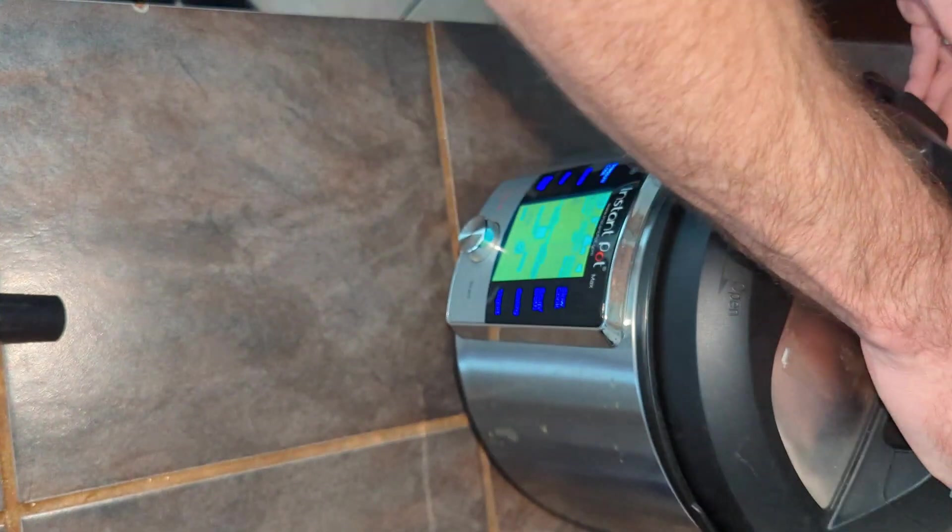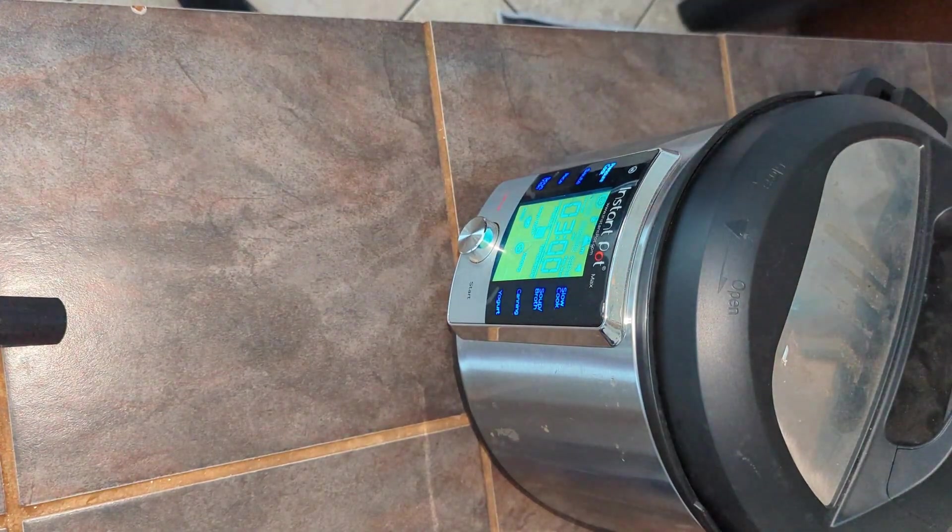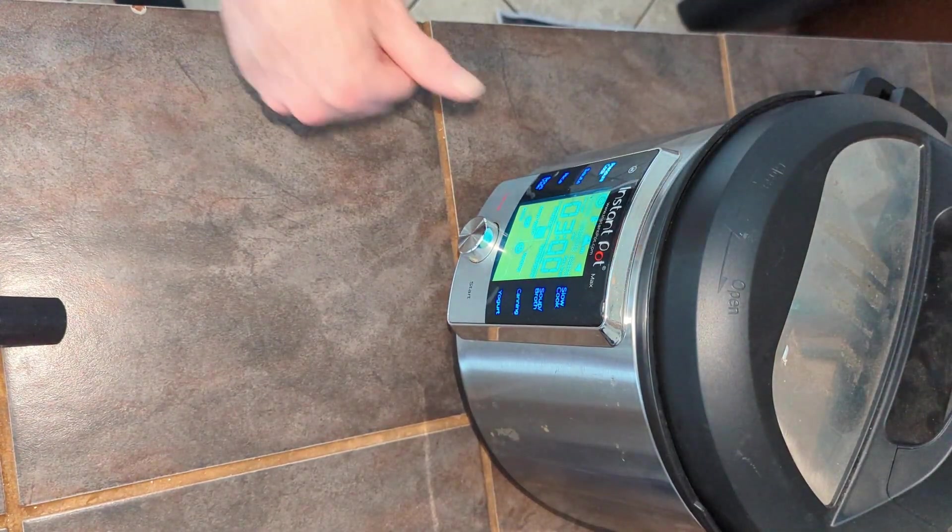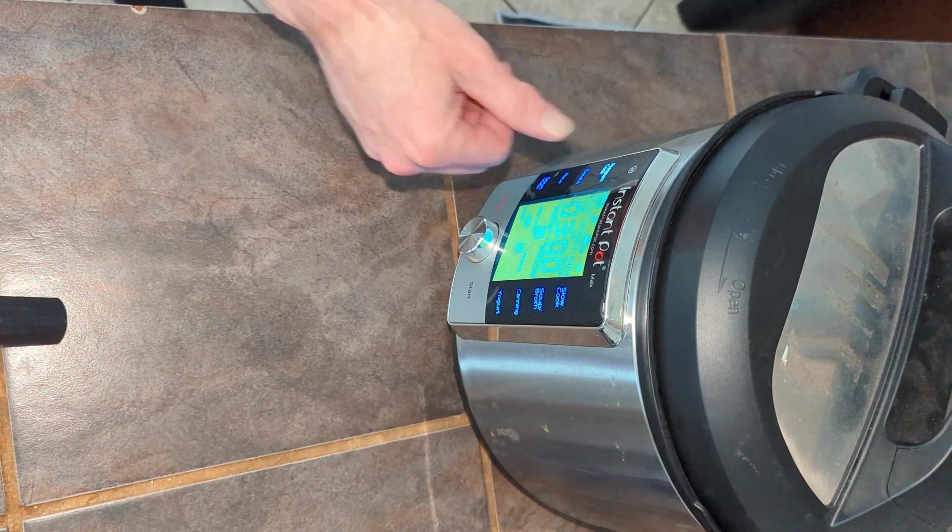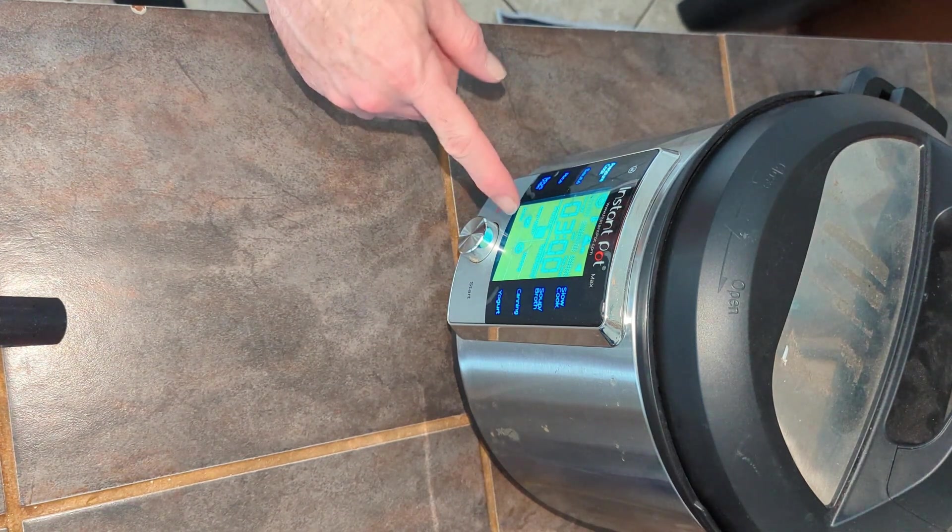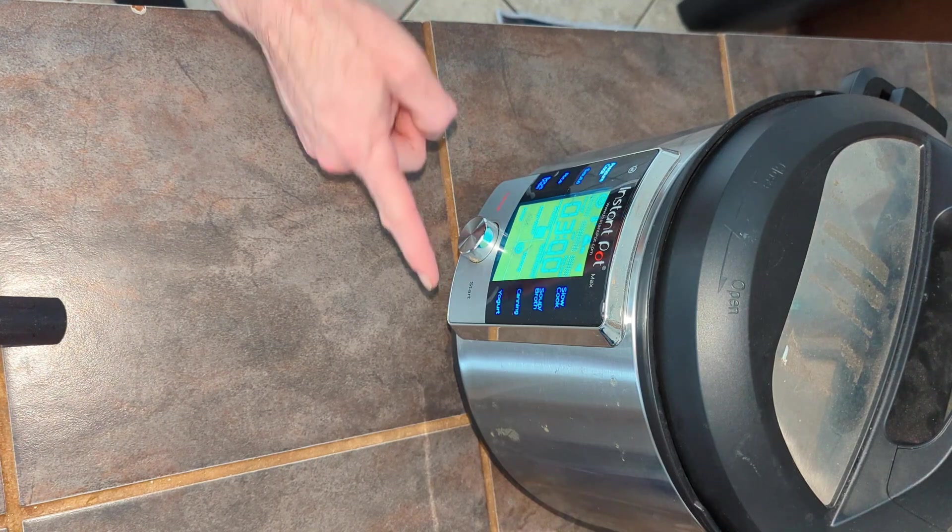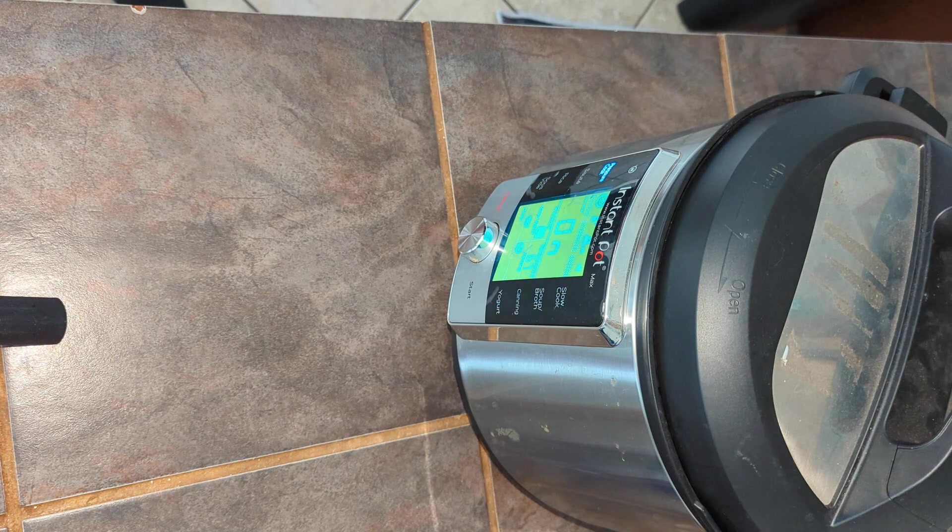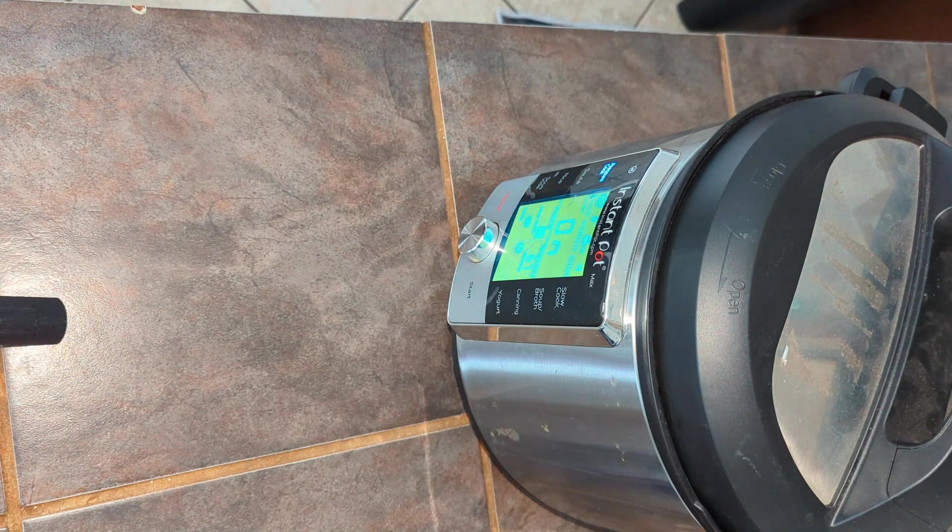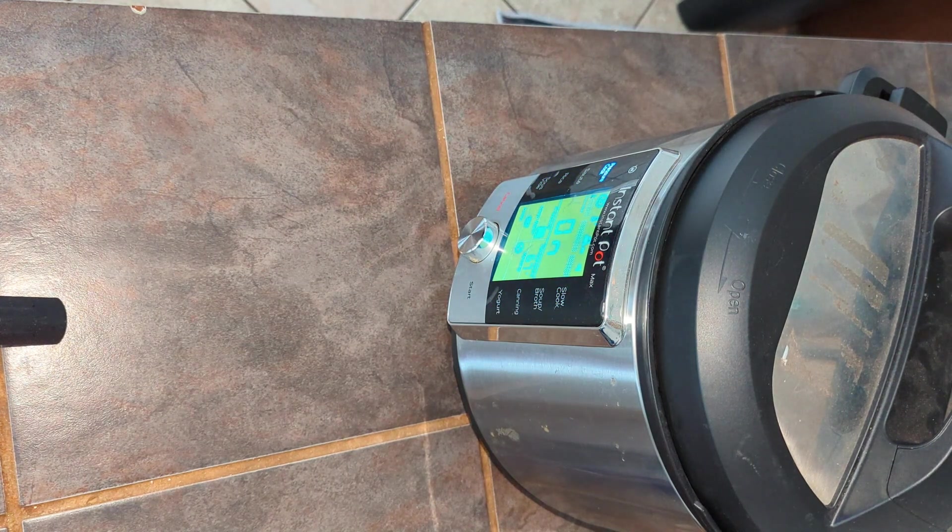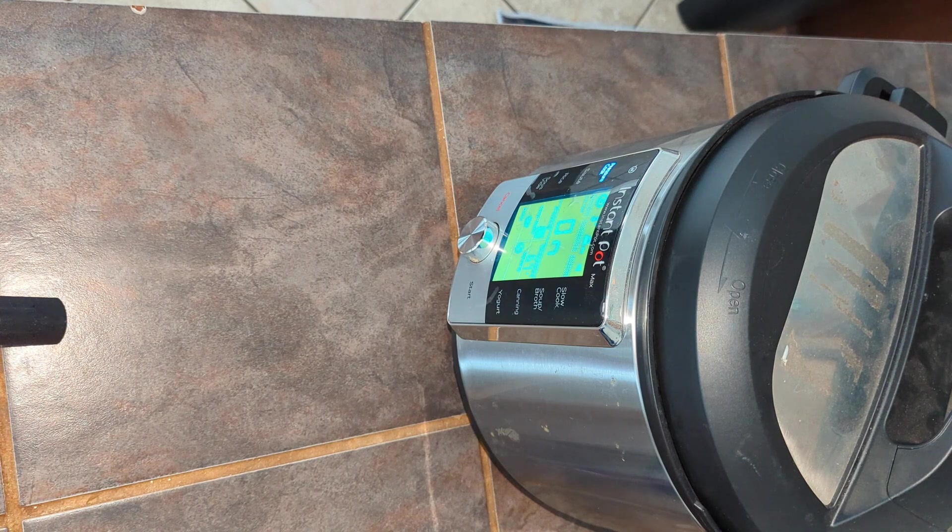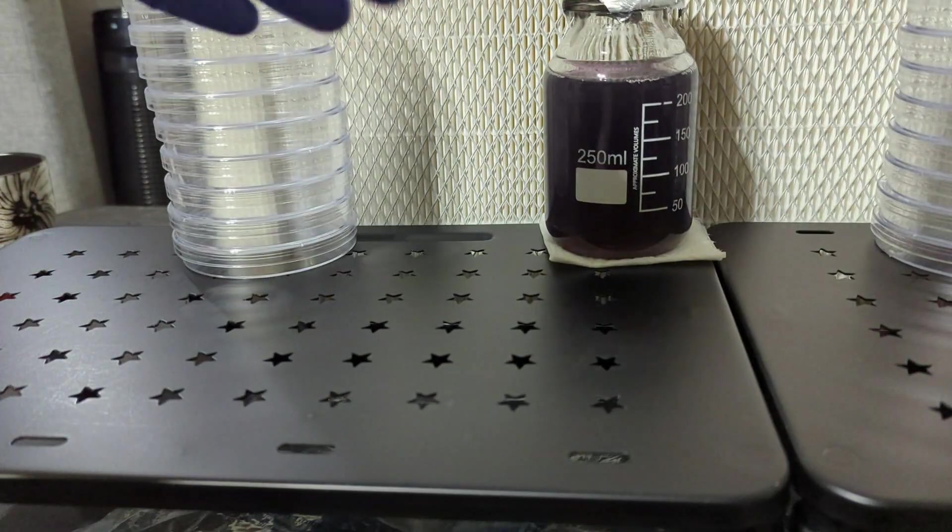Alternatively, you can get an infrared thermometer (they sell them on Amazon) so you can check the temperature without touching it. You want the temperature around 110 degrees, then it's ready to pour. Again, it's important not to pour it when it's too hot. However, you don't want to wait so long that it gets too cold. The agar will begin to solidify in the bottles if the temperature gets too low.